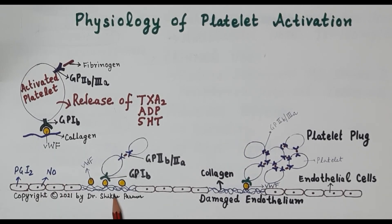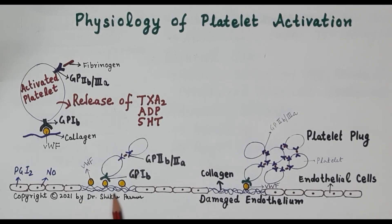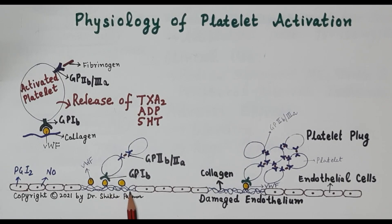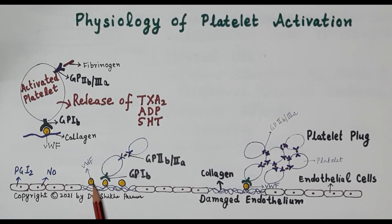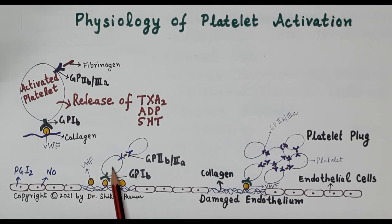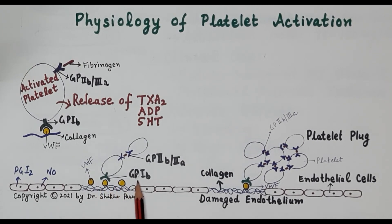Whenever there is damage to the endothelium, there is a fall in the synthesis of prostacyclin and nitric oxide, causing platelets to become activated. Additionally, damage to the endothelium exposes the sub-endothelial collagen — shown as blue-colored fibers in the diagram. The damaged endothelial cells release von Willebrand factor, which binds to collagen. Activated platelets then bind to von Willebrand factor through GP1b receptors located on the platelet surface.